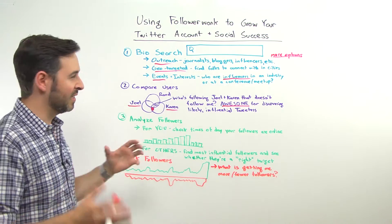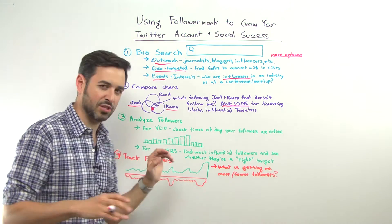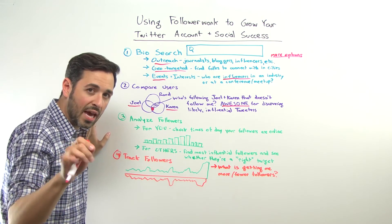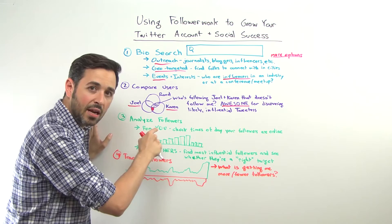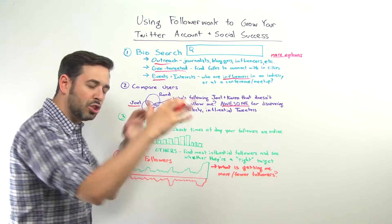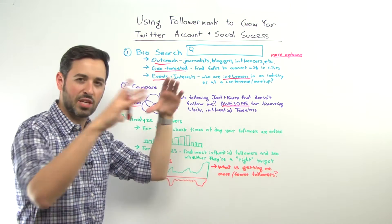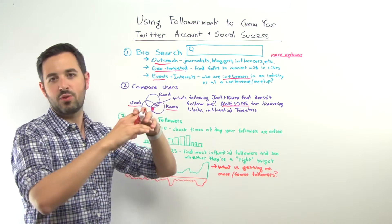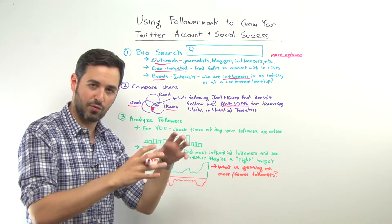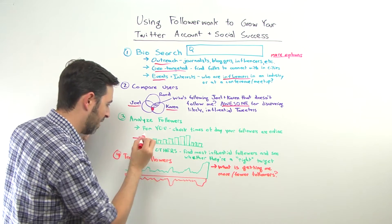Number three: the analyze followers feature. Tough call as to whether this is my favorite feature or compare users. For your own account, I recommend plugging it into the analyze followers. So I'd plug in @randfish — you plug in your account name. Then it'll show you all sorts of things. If you scroll to the bottom of that list, there's tons of stuff: geo data, tweet and retweet data, the distribution of the influencers of your followers, and all sorts of other cool stuff.